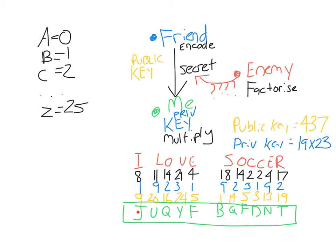If I received this message in green, how would I decode it and get back to 'I love soccer'? We do it one letter at a time. Starting with J: from the correspondence, J corresponds to the number 9. Because I know the private key, I know I shifted one letter up from I to J — so I subtract 1 to get 8, and 8 corresponds to I. For U, it's 20. I know I shifted 9 spots up, so I subtract 9 from 20 to get 11, which gives me L. For N, it's 13. I know I shifted 9 spots up, so 13 minus 9 is 4, which corresponds to E. That's how I decode the message.